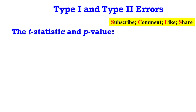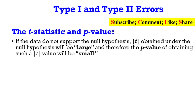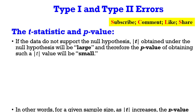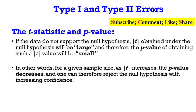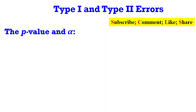Now let's talk about the T-statistic and the p-value. If the data do not support the null hypothesis, the T-statistic obtained under that null hypothesis will be large, and therefore the p-value of obtaining such a T-statistic will be small. In other words, for any given sample size, as your T-statistic increases, you are going to have a small p-value, which increases the confidence of rejecting the null hypothesis.